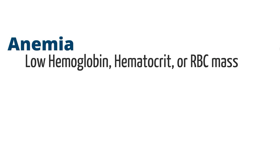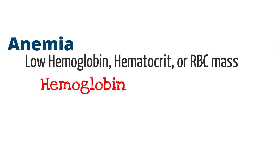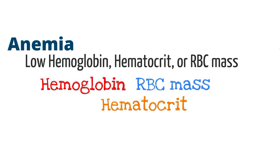Anemia is described as a low hemoglobin, hematocrit, or RBC mass. Which measure of blood levels you use will really depend on the culture at your hospital. I will generally talk about hemoglobin. Hemoglobin measures the amount of oxygen-carrying pigment that is present in the red blood cell. Other measures of the blood include hematocrit and RBC mass. Hematocrit measures the percentage of the volume of whole blood that is made up of red blood cells. Red blood cell mass is defined as the number of red blood cells in a given defined volume.